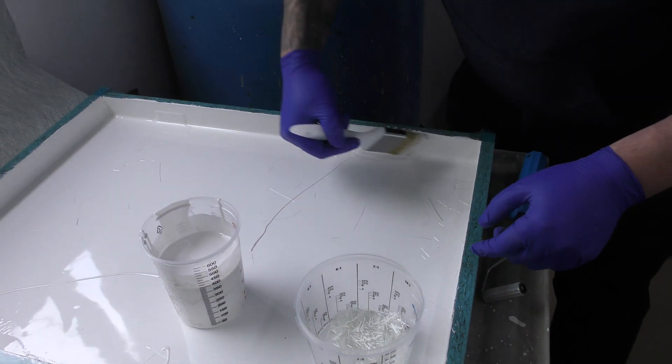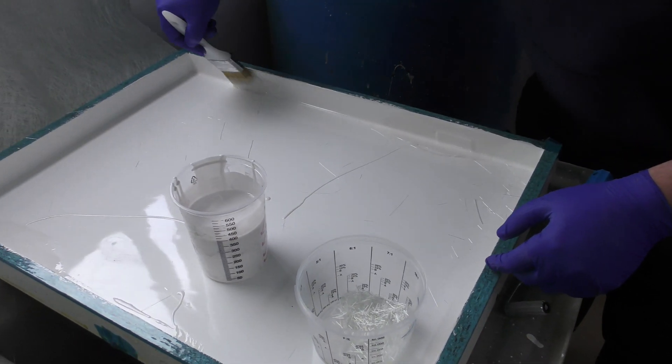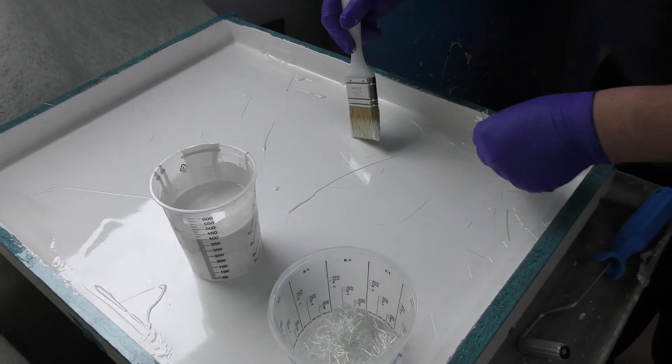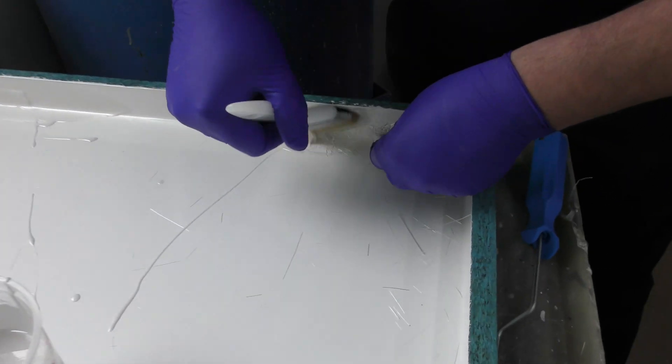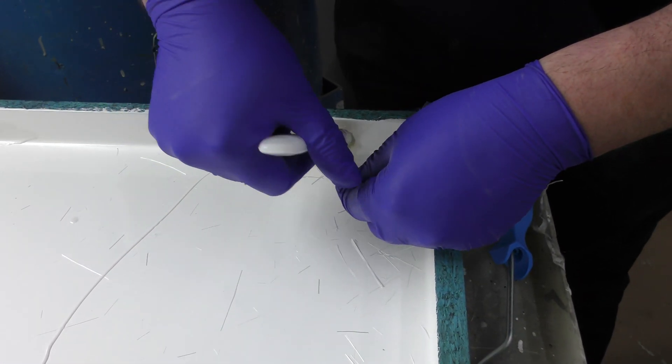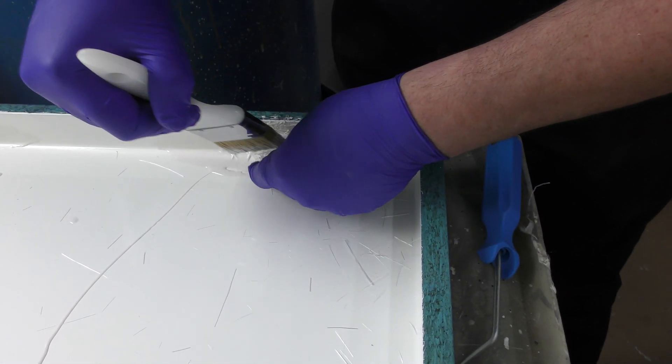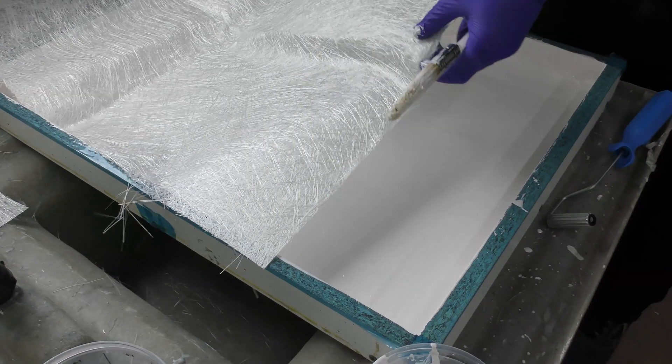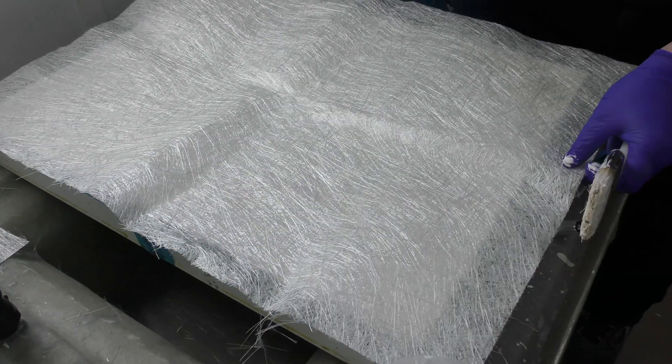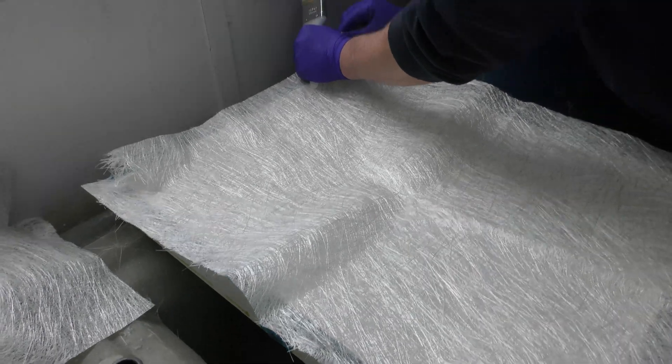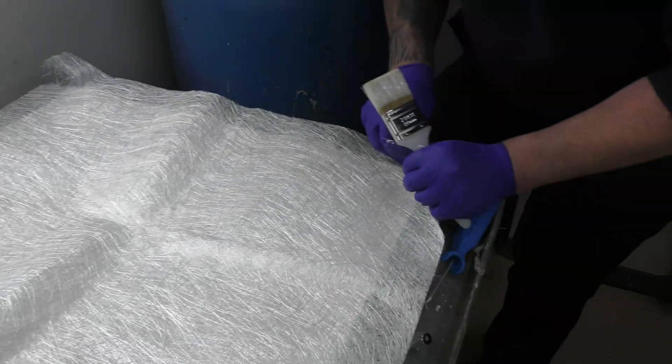Next we're going to start applying our chopped strand matting. For any sharp corners, we recommend putting in some loose chopped strands and stippling in with a brush like so. And then our first layer of mat can be placed in. Make sure you've cut this to size beforehand and tear the corners to enable it to fit into place.